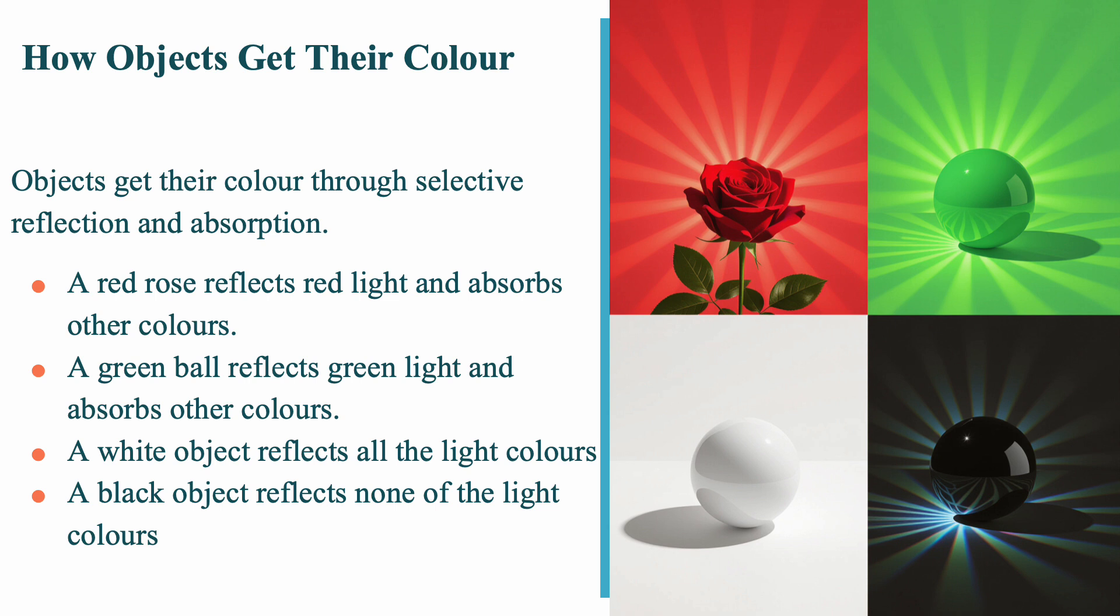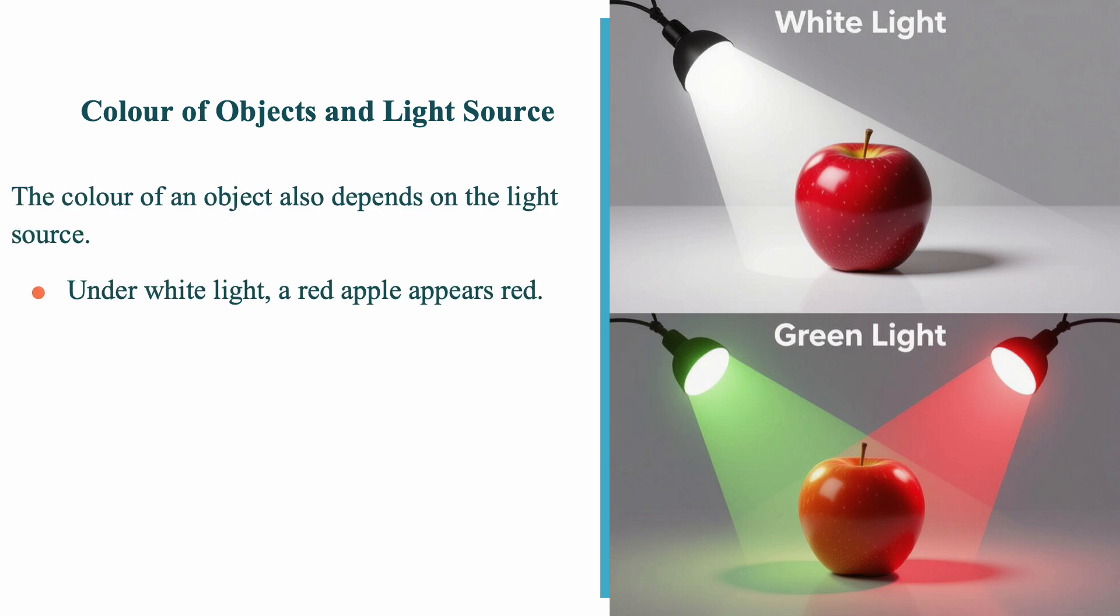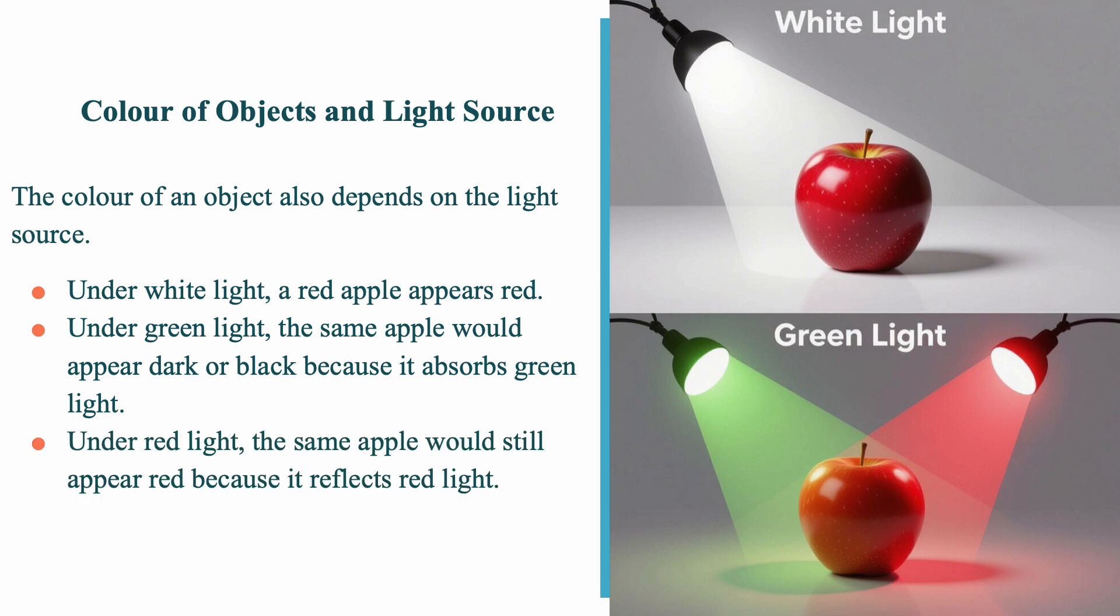Objects get their color through selective reflection and absorption. The color of an object doesn't only depend on the object itself. It also depends on the light source shining on it. For example, under white light, a red apple looks red. But if we shine only green light, the apple would appear black or dark because it absorbs green and doesn't reflect it. On the other hand, under red light, the apple would still appear red because it reflects red wavelengths. This shows how color perception changes with the light source.